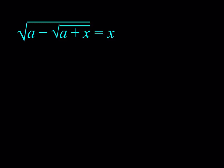So we do have this equation: the square root of a minus the square root of a plus x is equal to x, and we're trying to solve for x here. As I said earlier, a is a given number, so we're going to find our answers basically in terms of a.